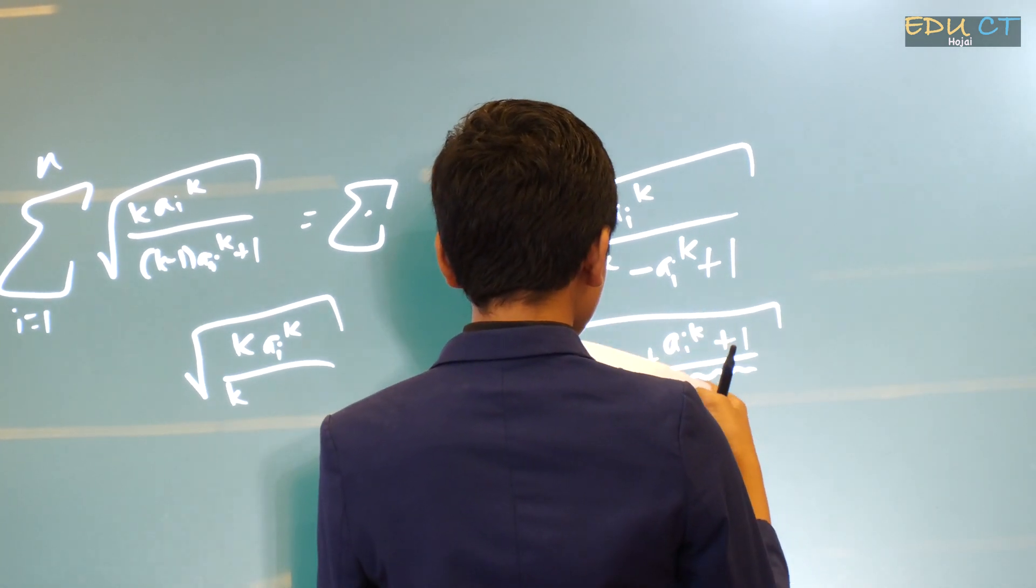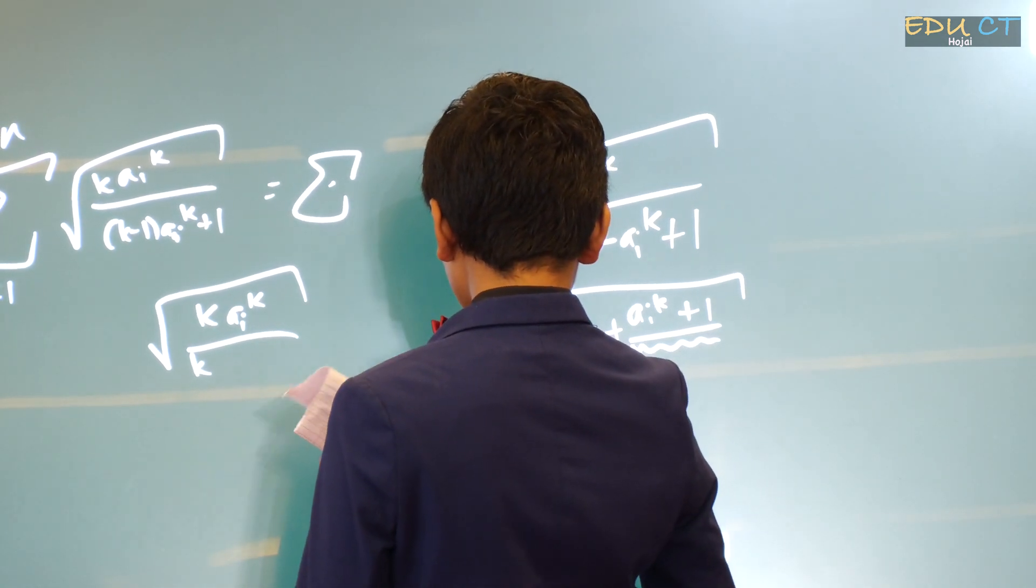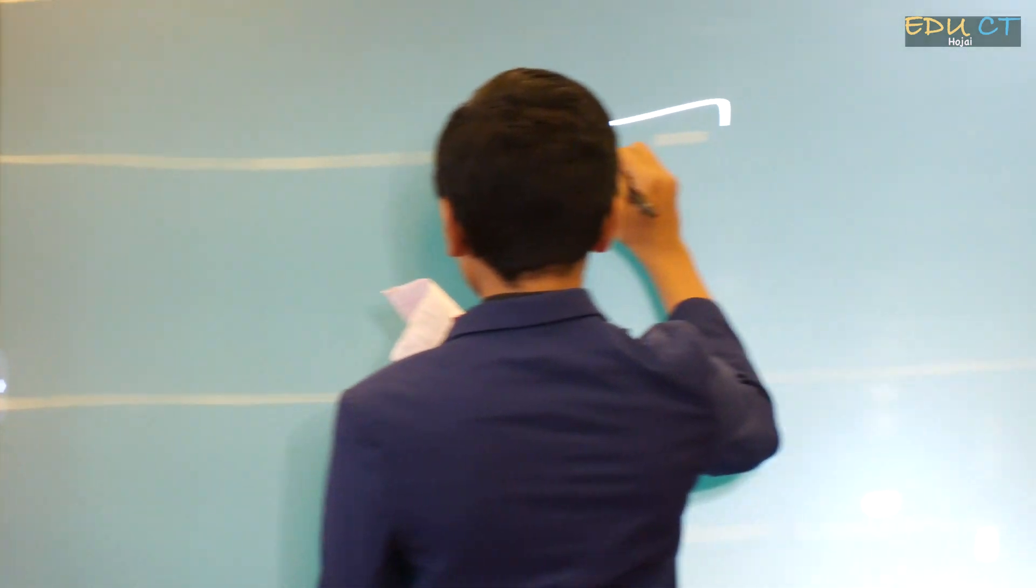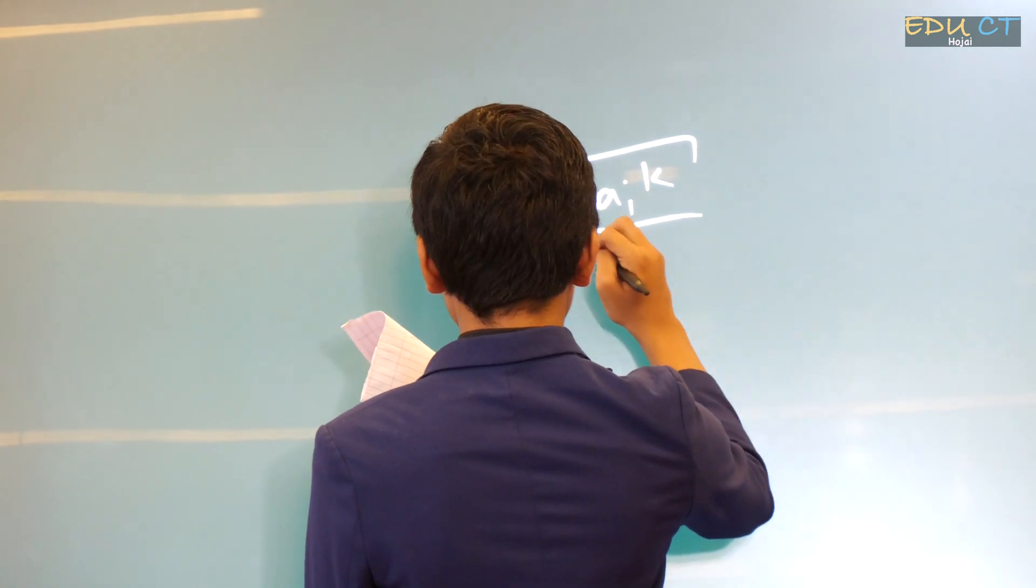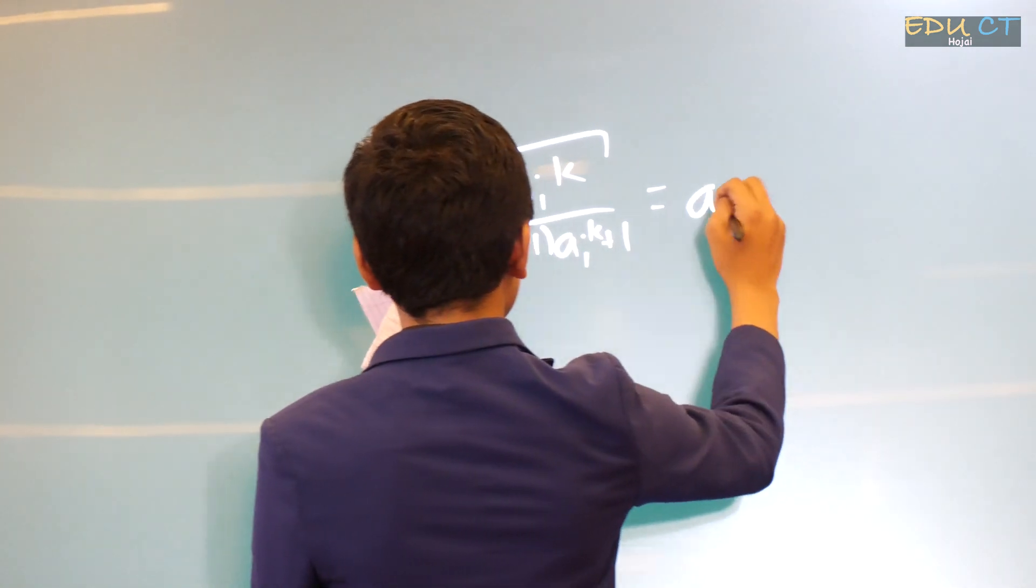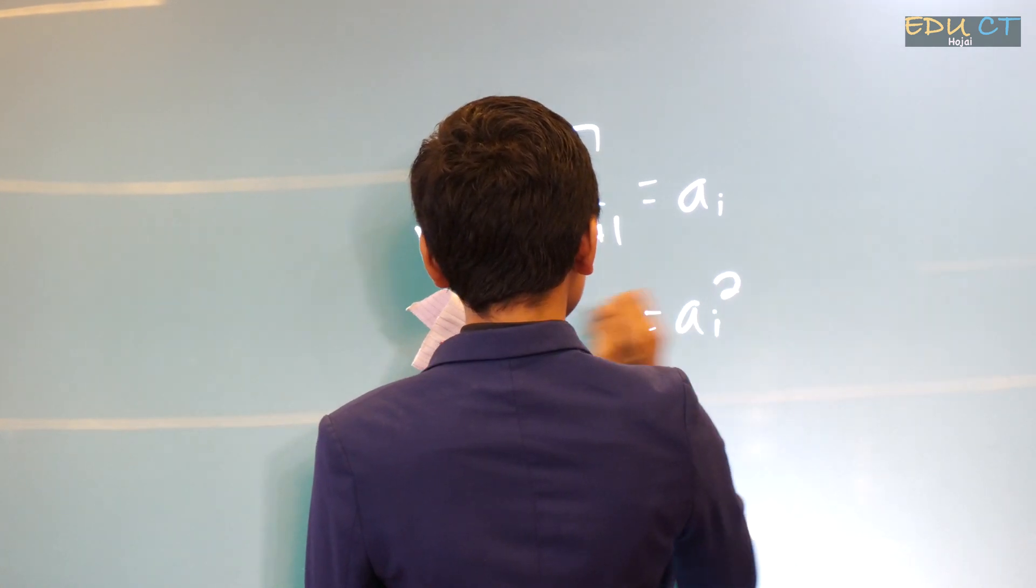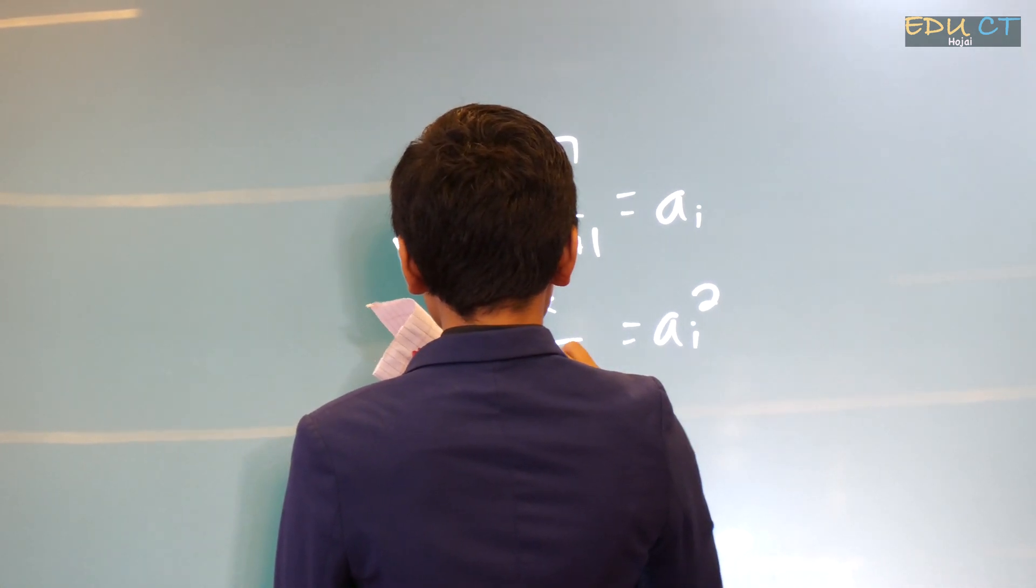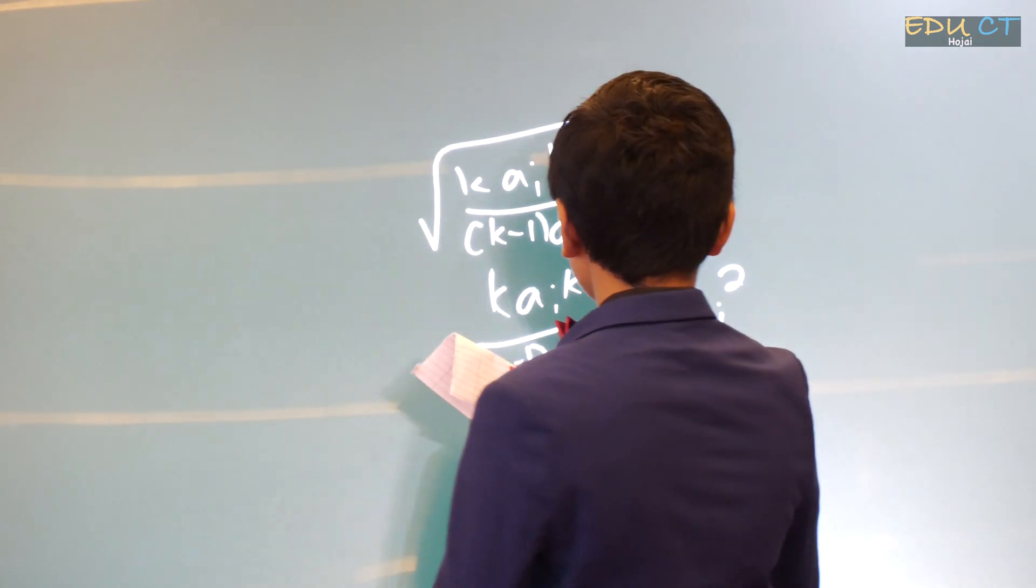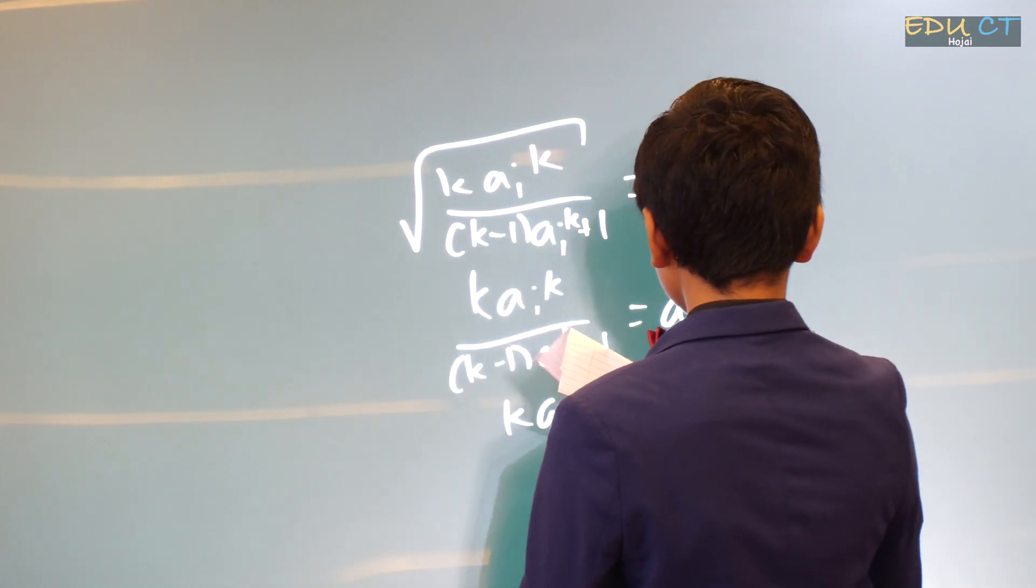So, this should be equal to... What I'm going to do is just set these equal to each other. Because otherwise, it's far too complicated to get through. So, this has to be equal to... So, now what I'm going to do here is square both sides. And now, I guess we can multiply both sides by this.